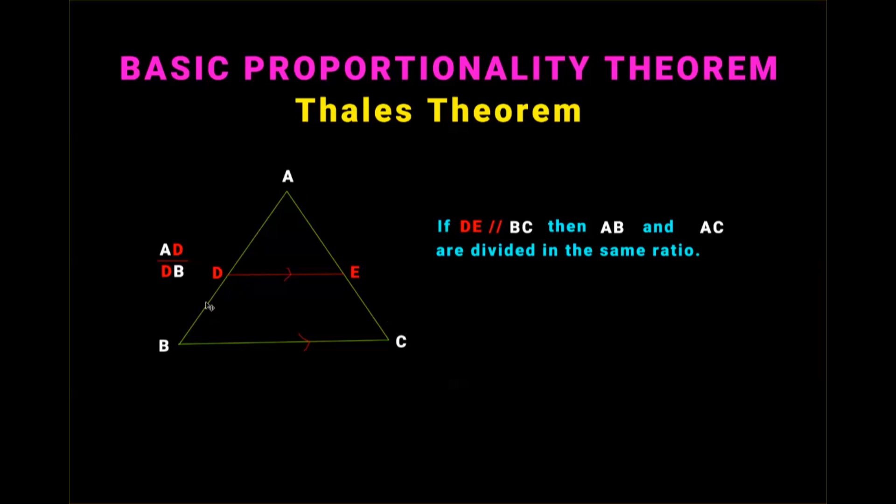Similarly, if you take a look at side AC, the point E has divided side AC into two parts: AE and EC. The ratio of these two parts can be written as AE by EC, or we say that point E has divided AC in the ratio of AE to EC.